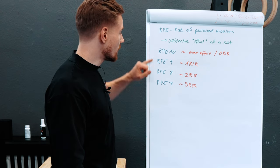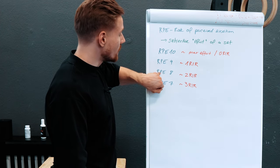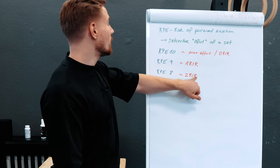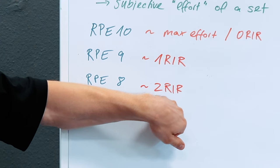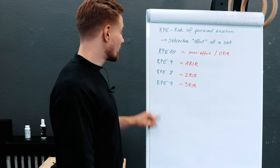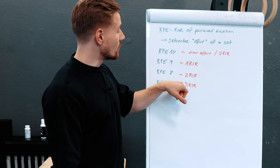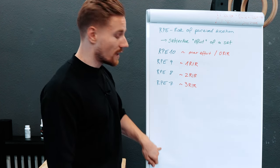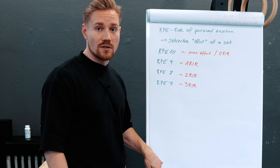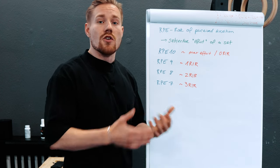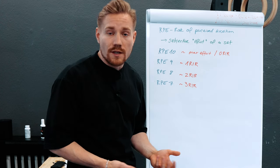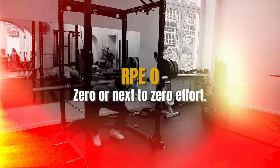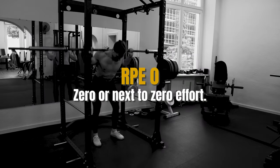That goes down further: RPE 8 equals roughly two reps in reserve — two reps in the tank for that set. RPE 7 means you had roughly three reps in reserve. Going all the way down to RPE 0, which is no effort at all, or at least super super low effort.